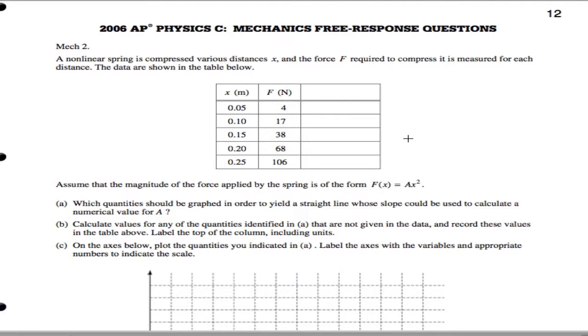We're going to know which quantities do we graph in order to yield a line whose slope could be used to get a. Well, if we graphed F versus x squared, we could actually figure this out. So what we want to do is we want to get values for x squared.